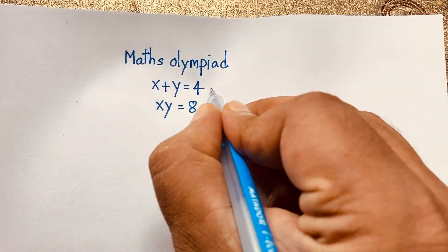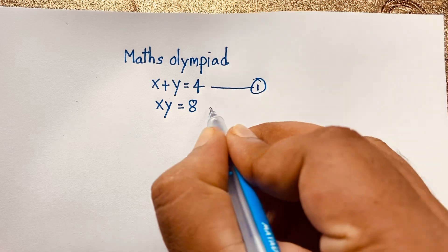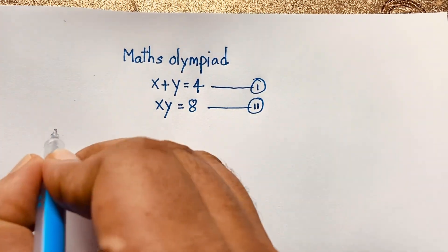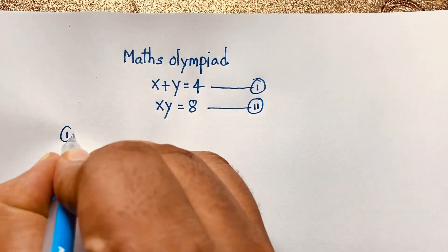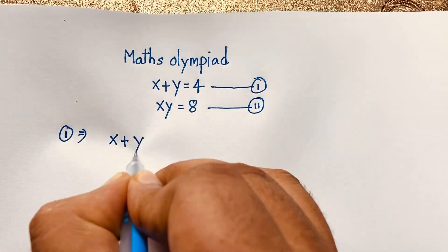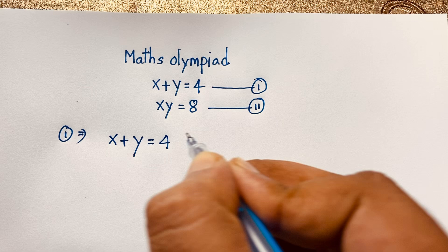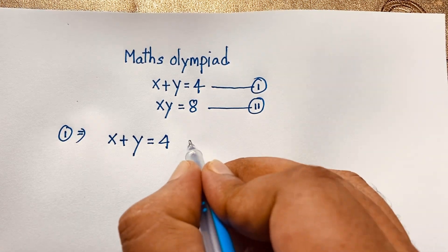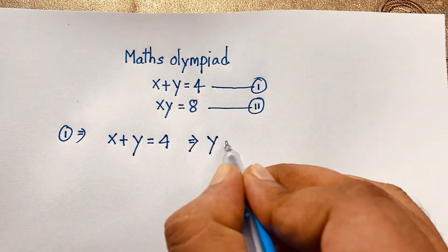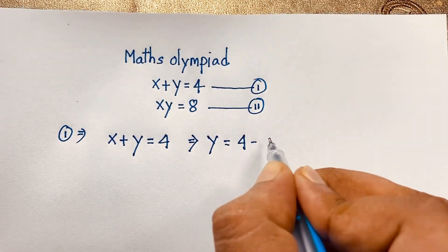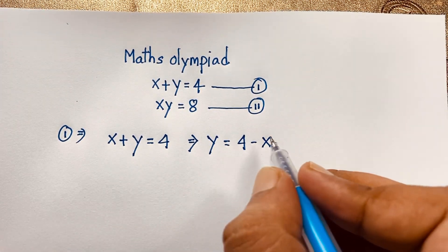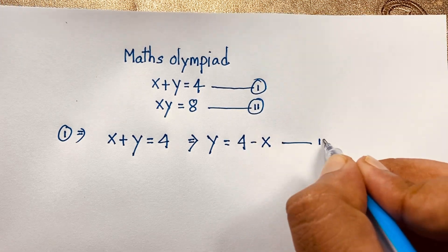This is our first equation and this is our second equation. Now, our first equation: x plus y is equal to 4. You can see here, y it will be 4 minus x. I just move this x to the other side, it will be negative x. This is our third equation.